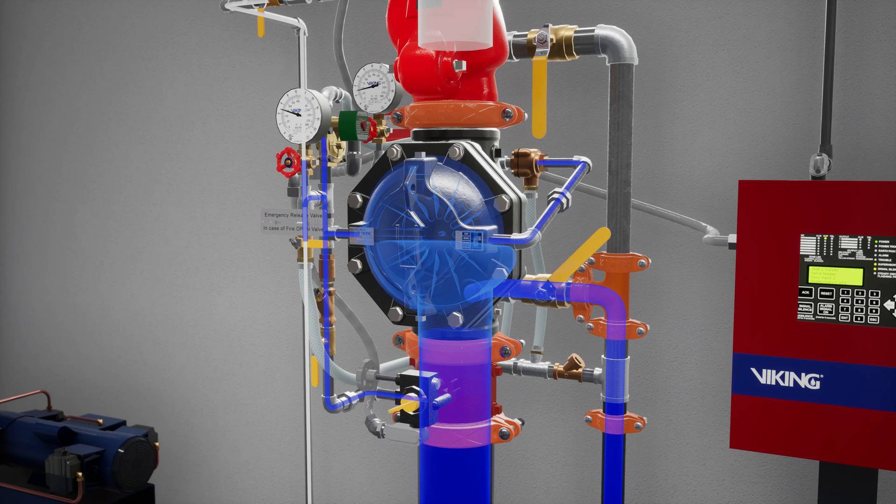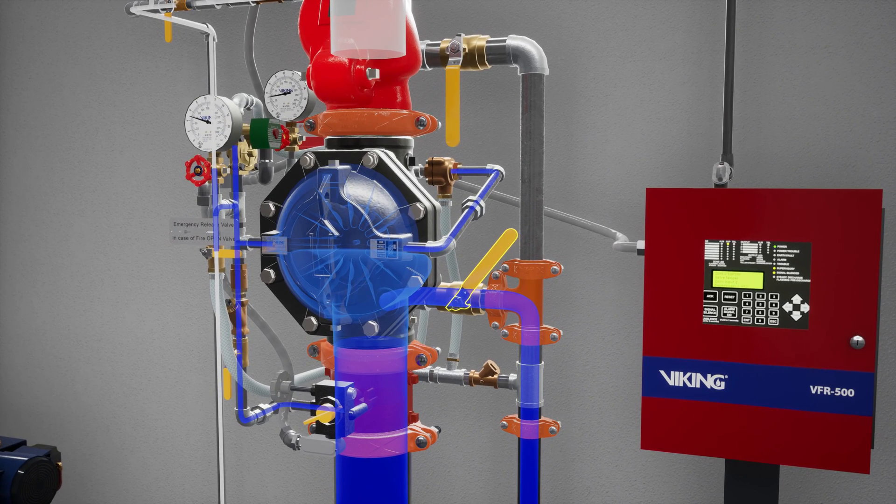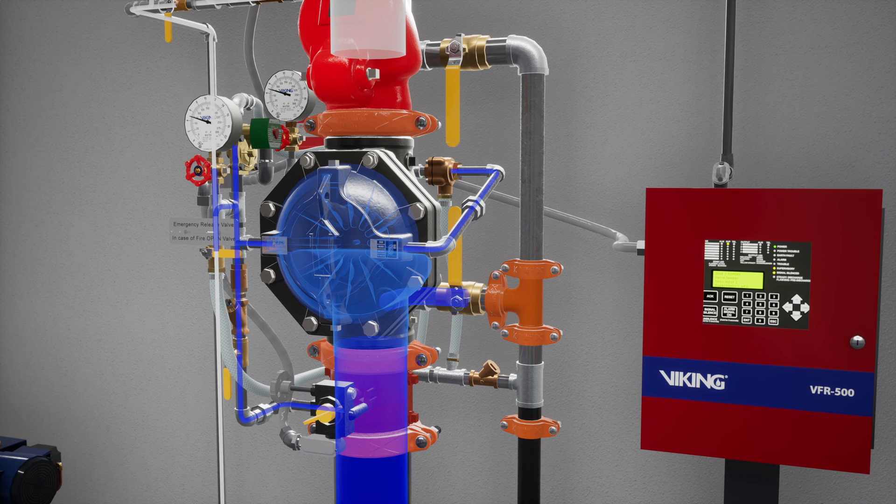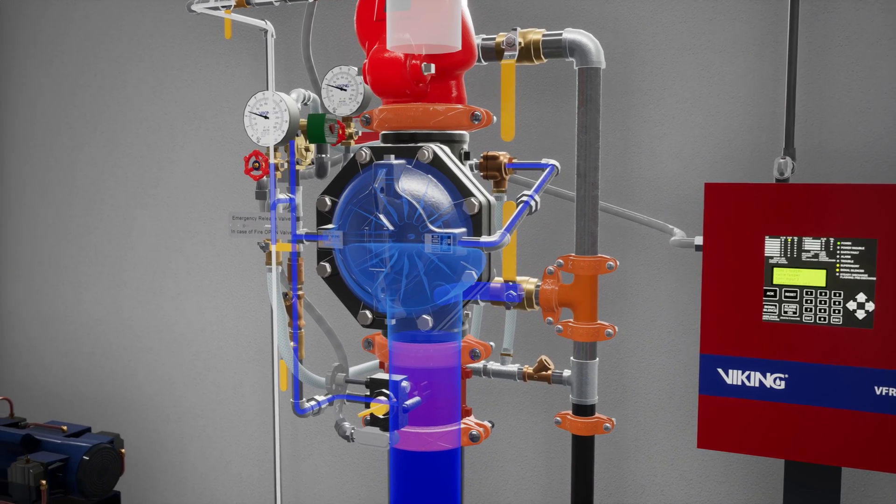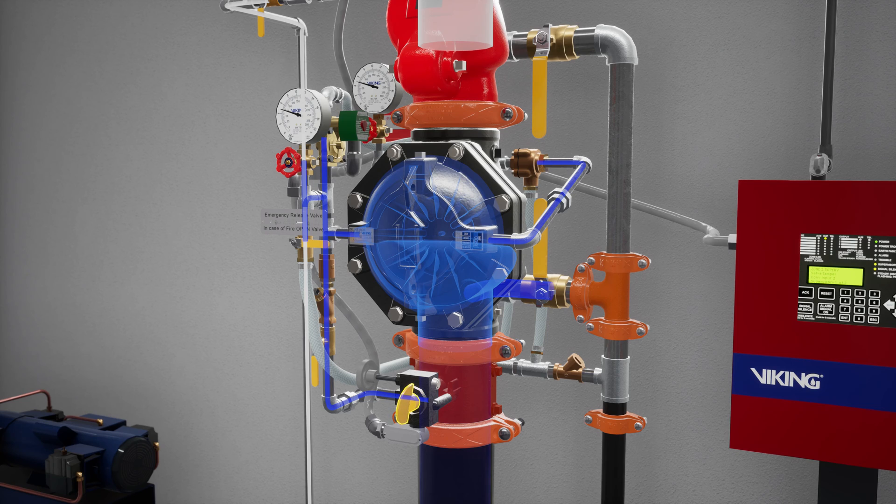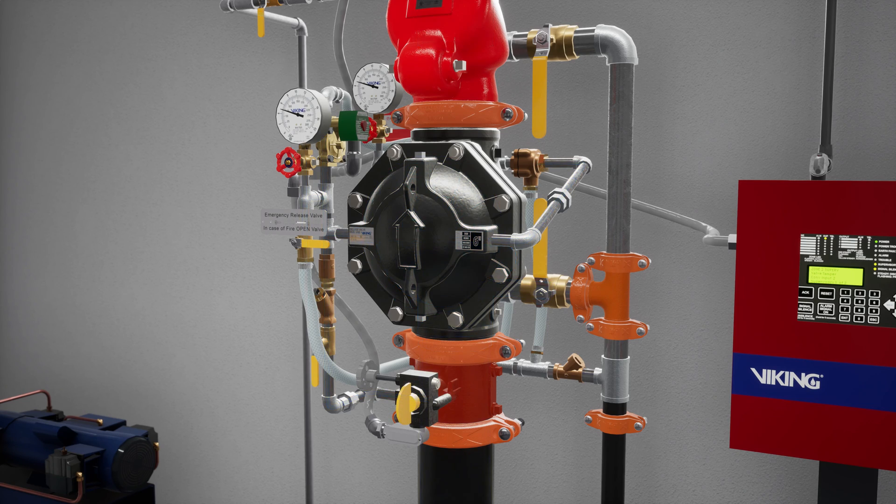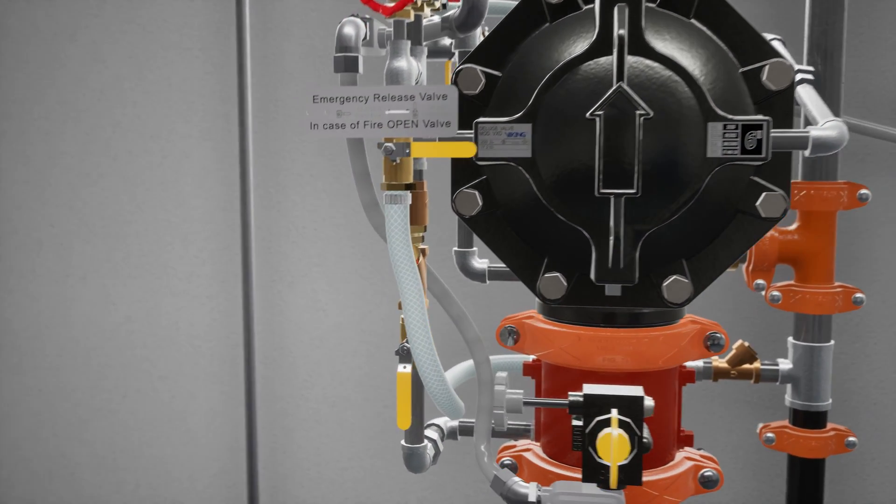Once flow has been established, close the flow test valve. Now fully open the water supply control valve. Verify that all trim valves are in their normal operating position.